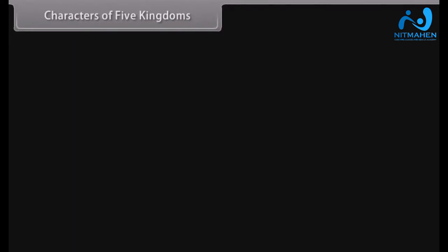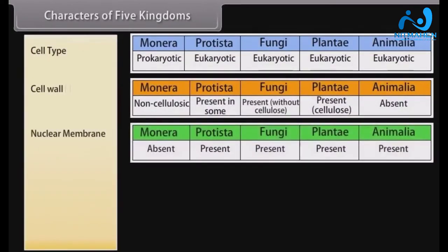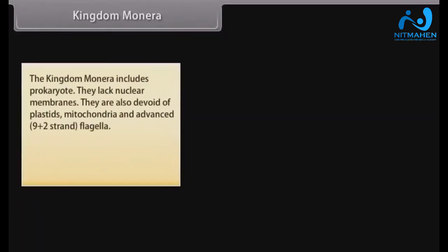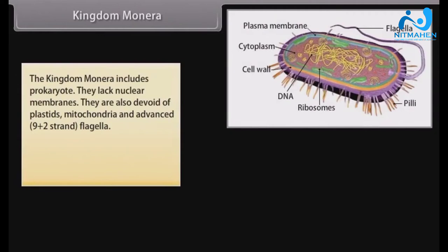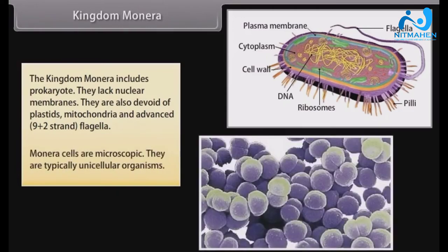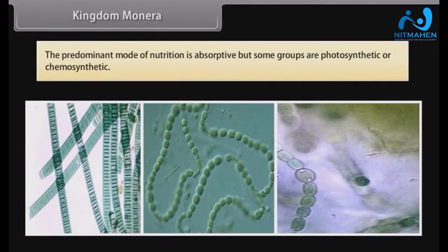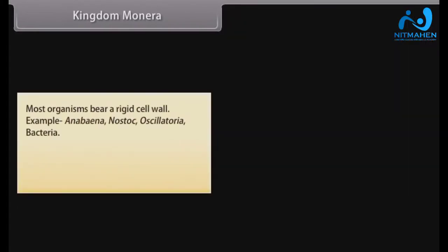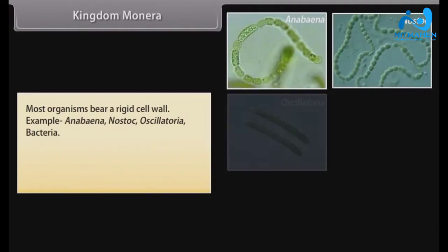Characters of Five Kingdoms. Kingdom Monera includes prokaryotes. They lack nuclear membranes and are devoid of plastids, mitochondria, and advanced 9+2 strand flagella. Monera cells are microscopic and typically unicellular. The predominant mode of nutrition is absorptive, but some groups are photosynthetic or chemosynthetic. Reproduction is primarily asexual by fission or budding; protosexual phenomena also occur. Most organisms bear a rigid cell wall. Examples include Anabaena, Nostoc, Oscillatoria, and Bacteria. Kingdom Monera or Prokaryota is divided into two sub-kingdoms.